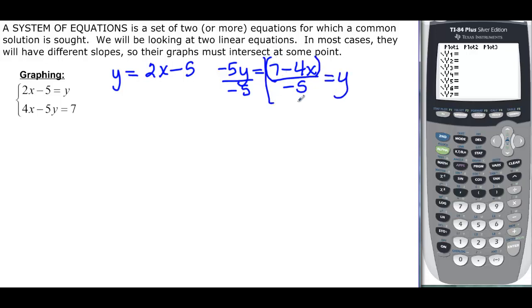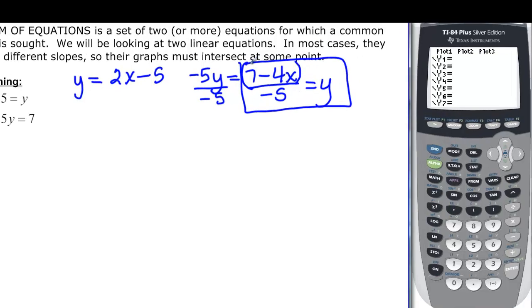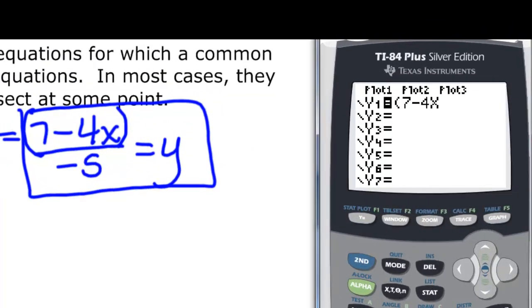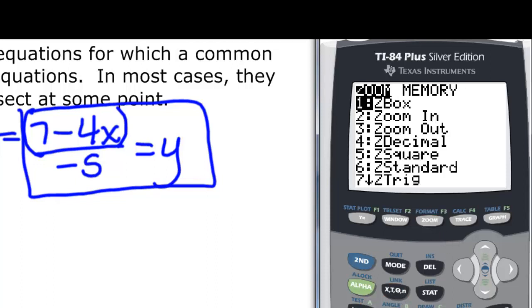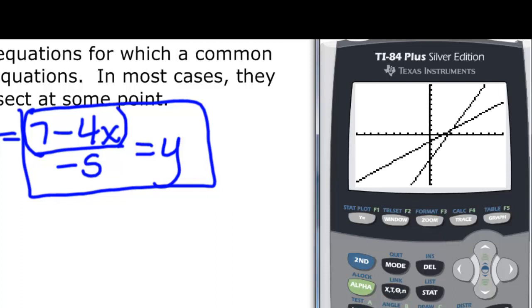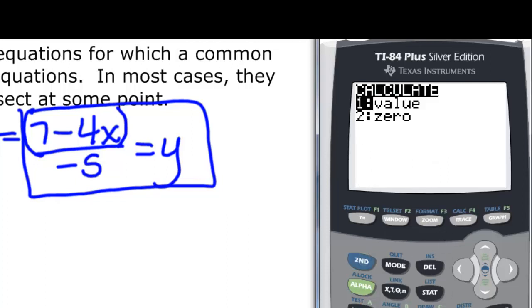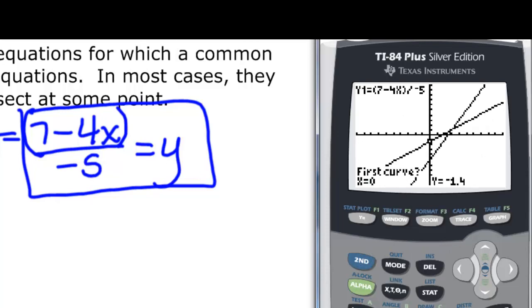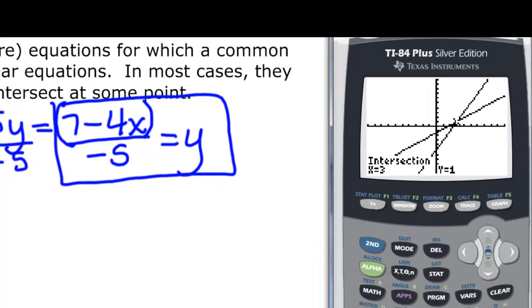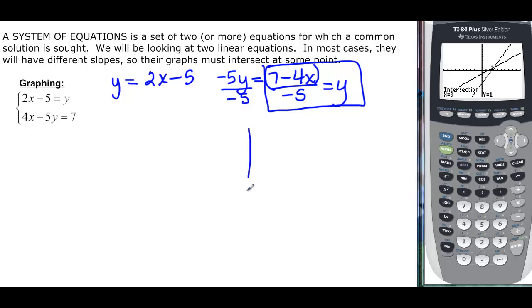So this is what I'm going to put in my calculator: y equals parenthesis 7 minus 4x, close my parenthesis, and then divide it by negative 5. My second equation is just 2x minus 5. A standard window should work, so I'll do zoom 6. Now I'm going to see my two lines. If I want to let the calculator do it, I do second trace and then intersect, which is 5. Since they're just two lines, we can say enter, enter, enter.